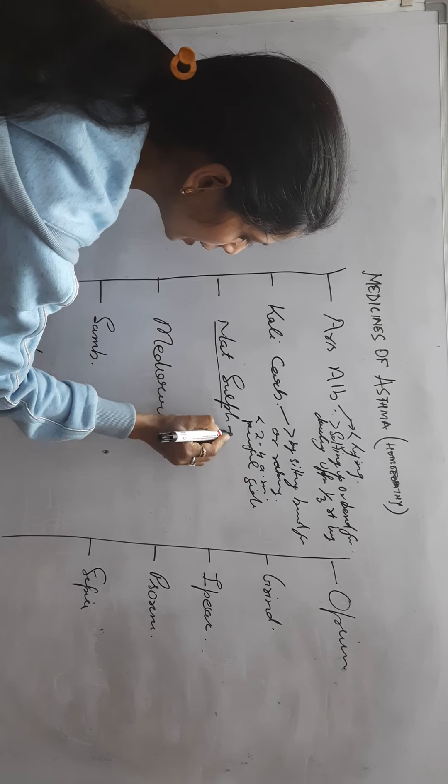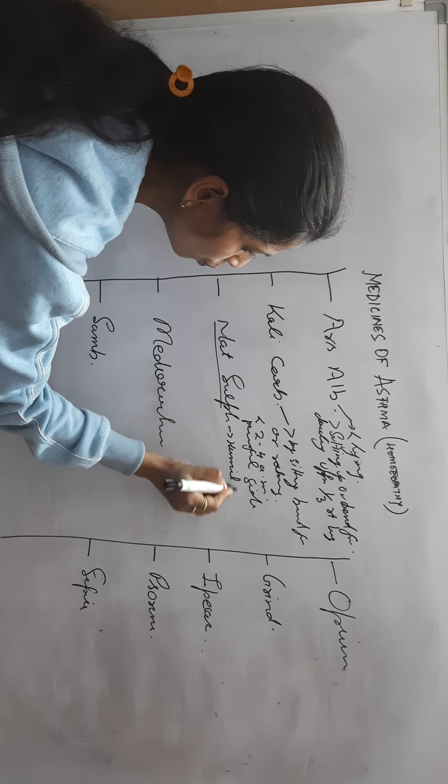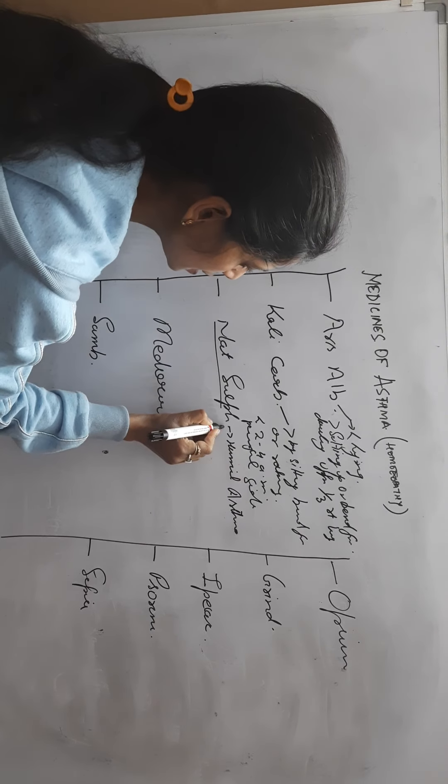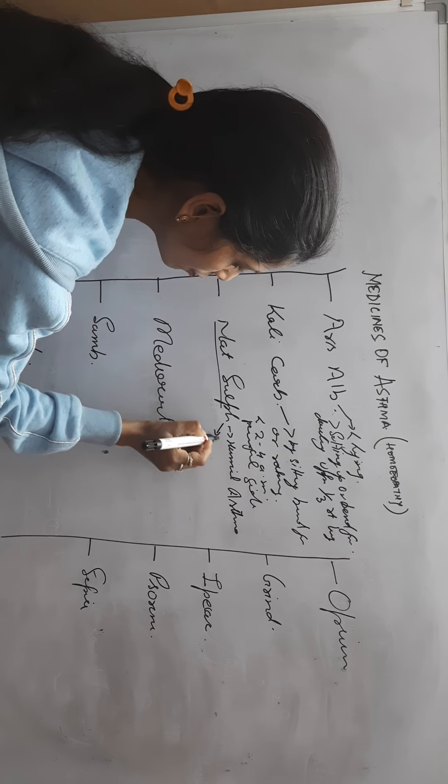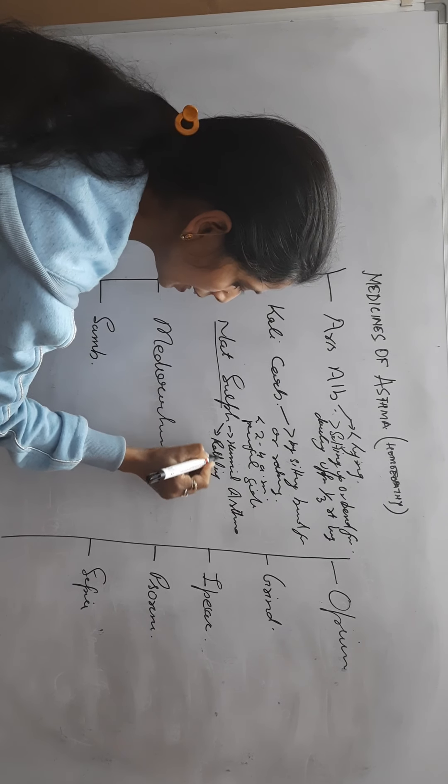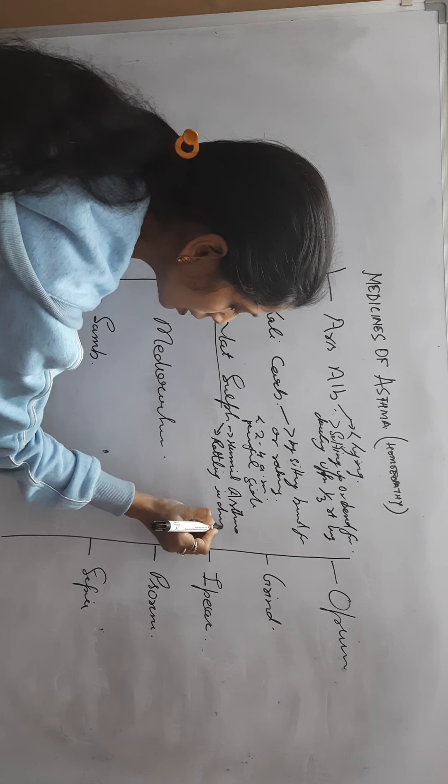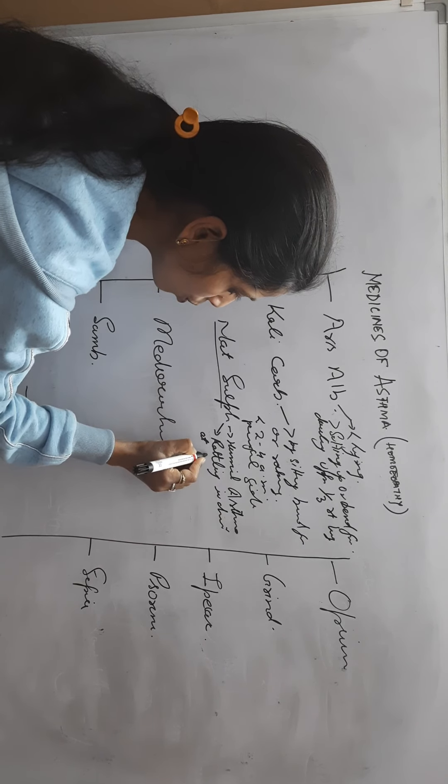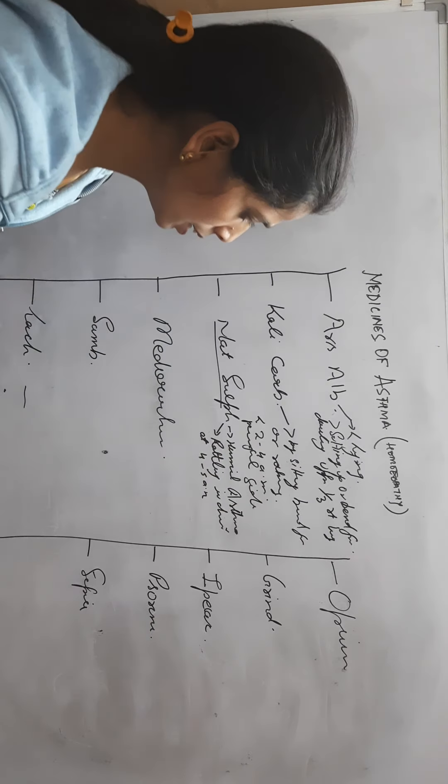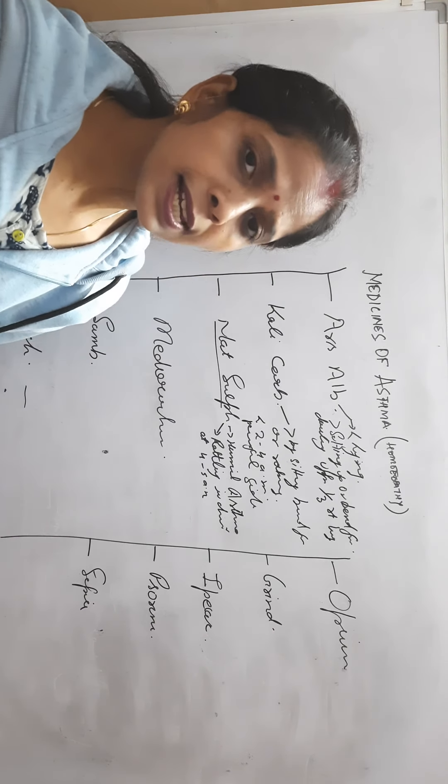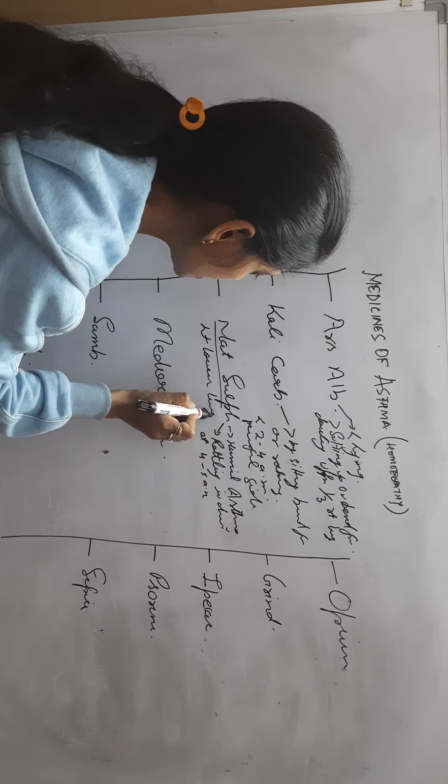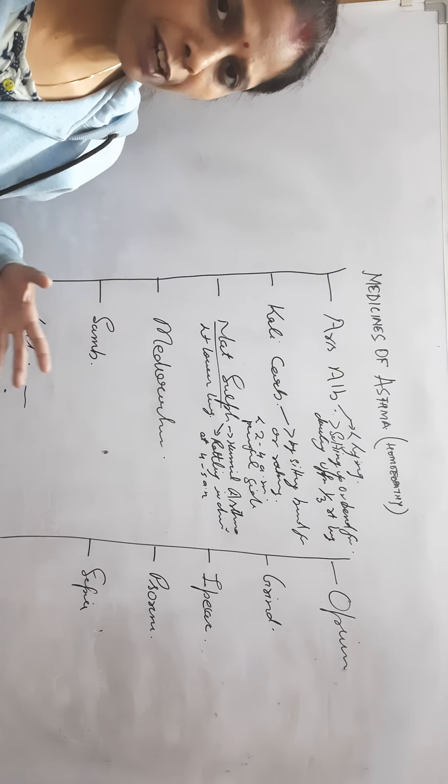In Natrum Sulf, here humid asthma. Here medicine has aggravation with wheezing, rattling in chest, especially at 4 and 5 AM. Here pain is in left lower lung, and patient is unable to lie on painful side.